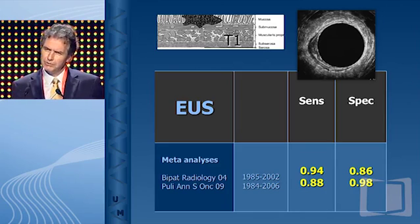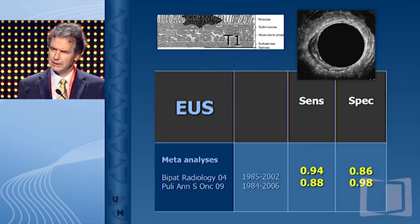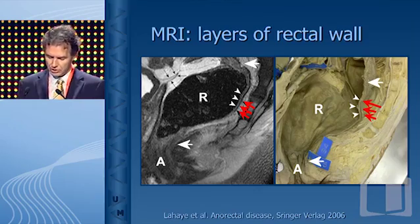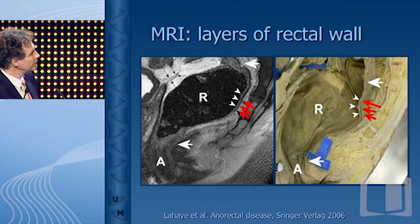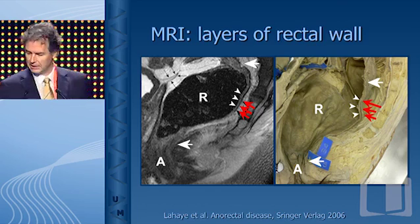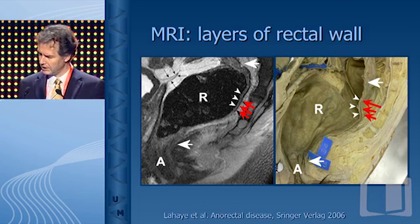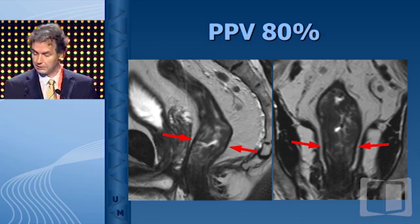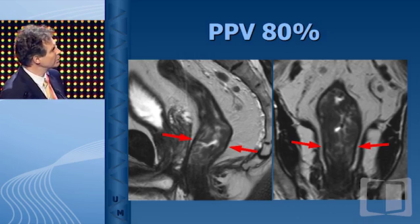For very superficial early tumors, endosonography is the best tool, but it requires a lot of expertise. MRI, for very superficial tumors, is not as good as EUS. MRI does show the layers of the bowel wall, and importantly there is a black line representing the muscular layer — if that black line is still intact, it's a T2 or less. This is a nice example: it could be a T1 or T2 tumor, certainly not a T3. You can also see some ugly nodes that may be difficult to reach with ultrasound if they are higher up.